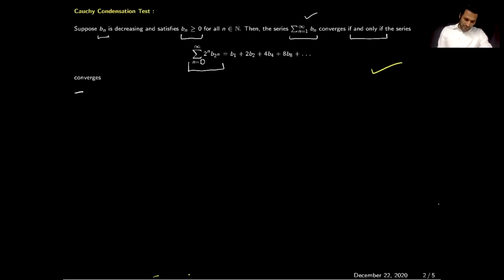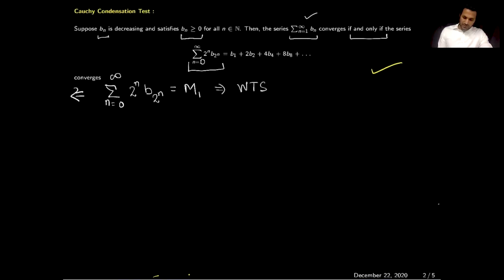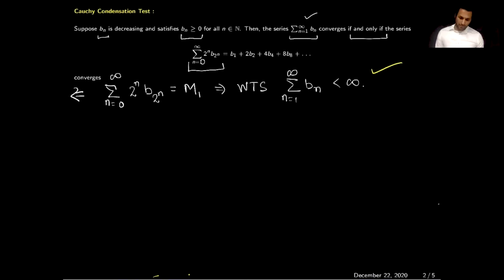Now we prove the reverse direction of the theorem. We assume that the summation from n=0 to infinity of 2^n * B_{2^n} is convergent, with sum M_1. We want to show that the series summation from n=1 to infinity of B_n is also convergent. To do so, we compute the partial sum S_m = summation from n=1 to m of B_n and prove it is bounded and monotone.